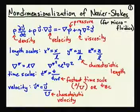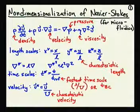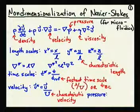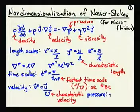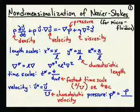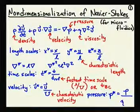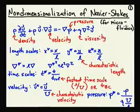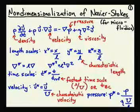Finally, we need to non-dimensionalize the pressure by a characteristic viscous shear stress. This characteristic viscous shear stress is given by the viscosity eta times the characteristic velocity U, normalized by the characteristic length L. We'll discuss later why that particular value was chosen.